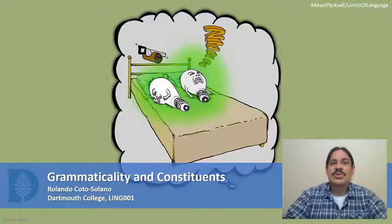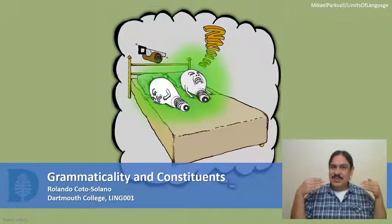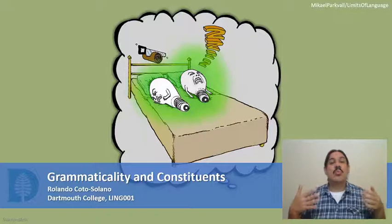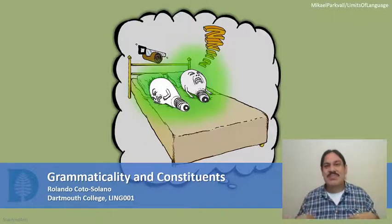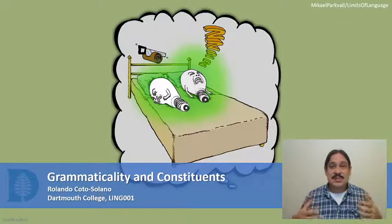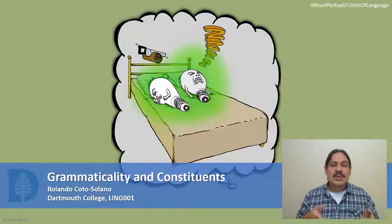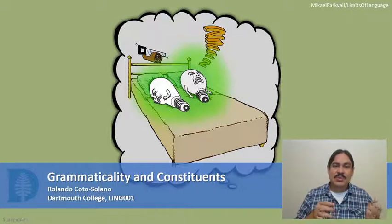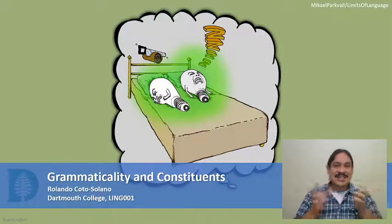In the next couple of videos, we're going to step back from the trees and try to figure out why we are using these fairly complex x-bar structures. The short answer is that they allow us to explain some very interesting phenomena in human syntax. Here we'll take a look at two of them: grammaticality and constituents.